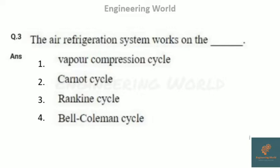The next question: the air refrigeration system works on which cycle? Options are vapor compression cycle, Carnot cycle, Rankine cycle, and Bell-Coleman cycle. It is a straightforward question — it works on the reverse Brayton or Bell-Coleman cycle. So the answer is Bell-Coleman cycle.